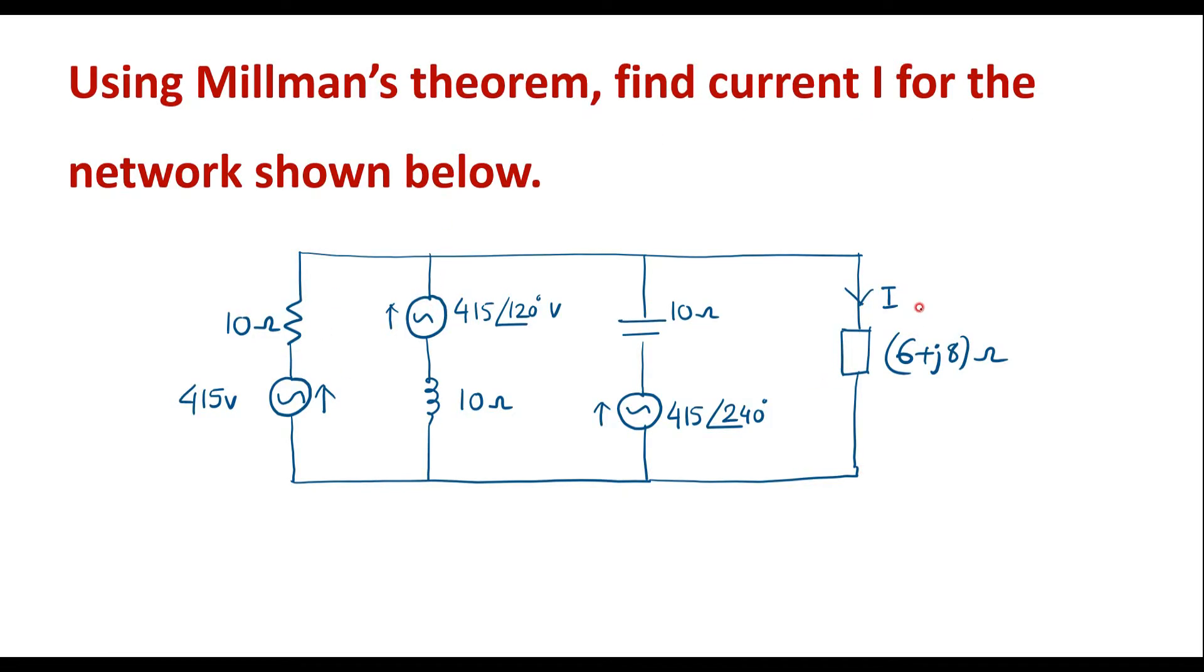This is the given circuit. Here we're supposed to calculate I which is the current flows through 6 plus J8 impedance using Millman's theorem.